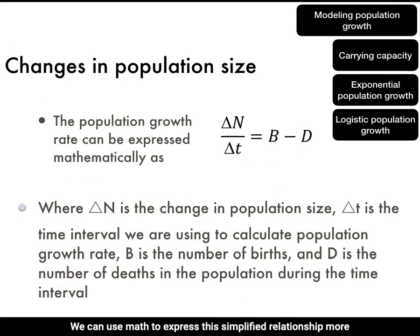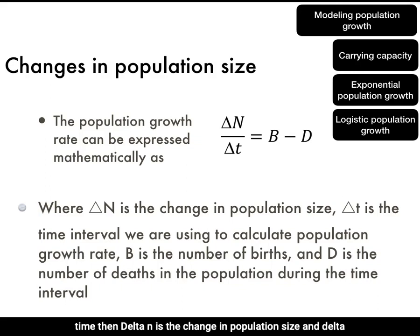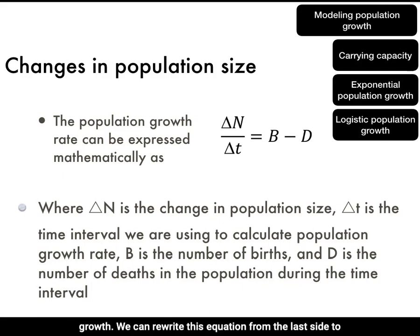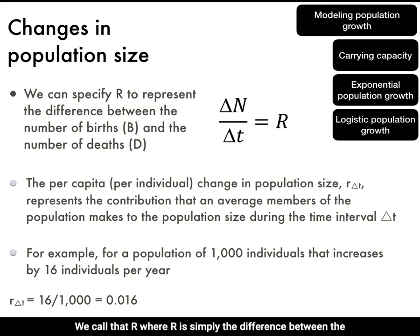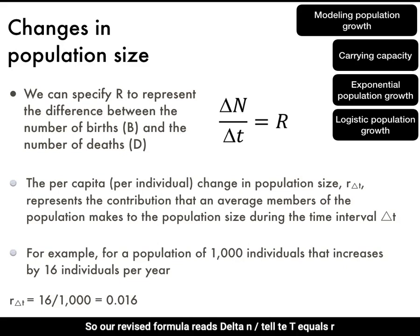We can use math to express this simplified relationship more concisely. If N represents population size and t represents time, then ΔN is the change in population size, and Δt is the time interval over which we are evaluating population growth. We call r the per-capita rate, where r is simply the difference between the number of births and the number of deaths. Our revised formula reads: ΔN divided by Δt equals r.